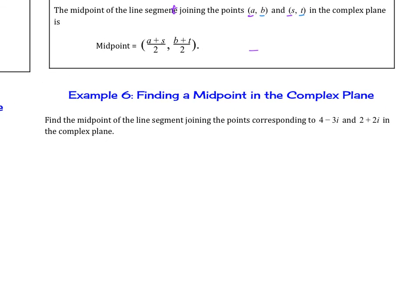So find the midpoint in the complex plane. Let's try it with this example. We're going to do 4 plus 2 over 2, and then negative 3 plus 2 over 2. This gives us 6 over 2, which is 3, and then negative 3 plus 2 is negative 1, so negative 1 half. So that is the midpoint.